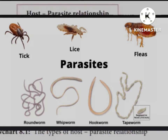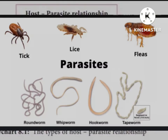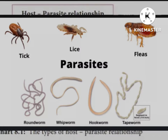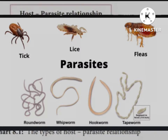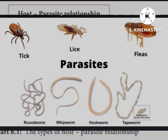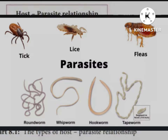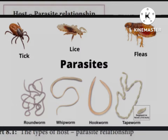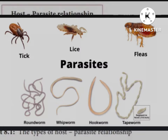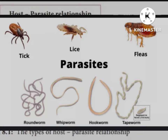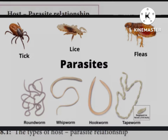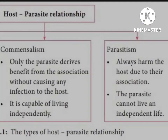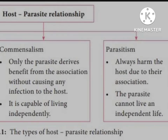The third relationship is parasitism. It is an association in which the parasite derives benefit and the host gets nothing in return, and always suffers from some injury. The parasite cannot live an independent life. So the host-parasite relationship is not a fair one — the host is harmed and the parasite cannot survive independently.